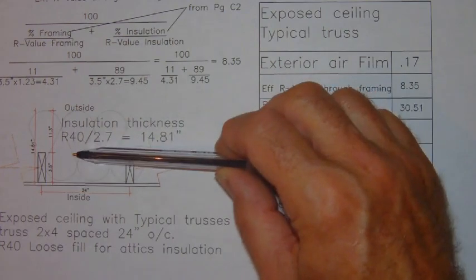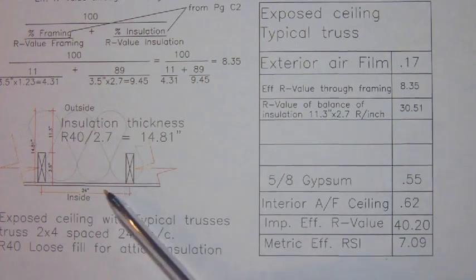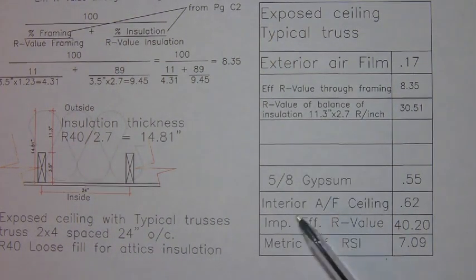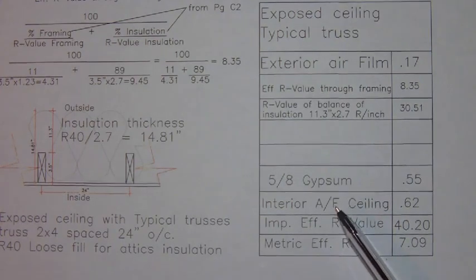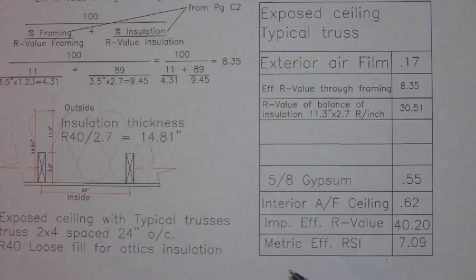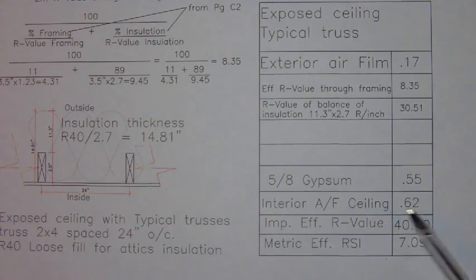So that's going to be this 11.3 inches of insulation. Then we've got our 5/8 layer of gypsum. So gypsum is listed at 0.88 per inch. So 5/8 is 0.625, so 0.625 times 0.88 gives us 0.55. The interior air film for an exposed ceiling has an R-value of 0.62.